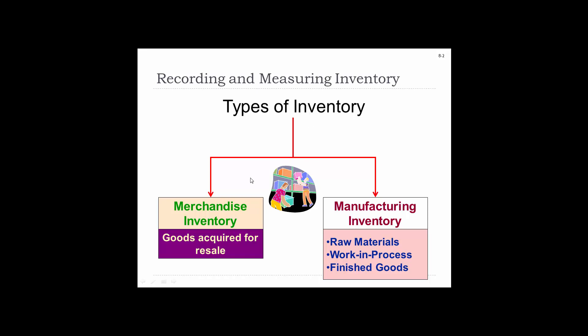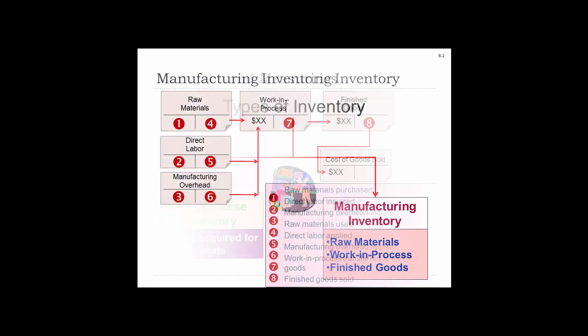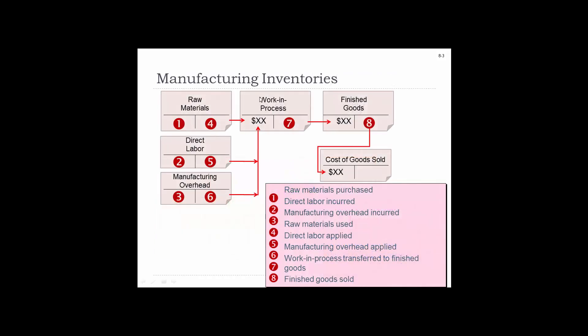There are different types of inventory. There's merchandise inventory, which is goods acquired for resale, and then there's manufacturing inventory, which includes raw materials, work in process, and finished goods. So this is if we're making it, and this is if we bought something and then we're reselling it.